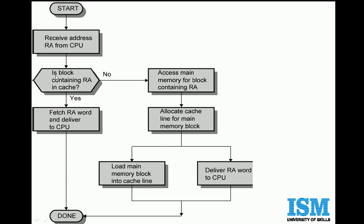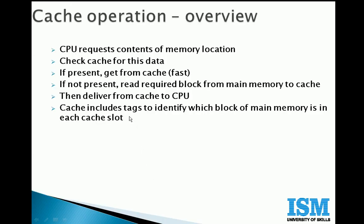If the block that the CPU was looking for, pertaining to the received address, is not in cache, then access the main memory block containing the received address, allocate a cache line, reserve the cache line for the main memory block, and deliver the data to CPU. In parallel, load the main memory block into the cache line. So logically, if the data is not present in cache, read the required block from main memory to cache, and then deliver from cache to CPU.